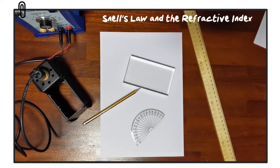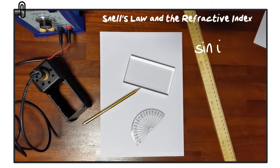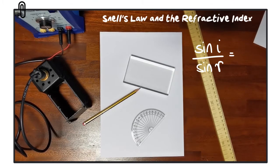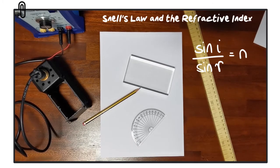That constant is known as the refractive index. We write this as the sine of the angle of incidence divided by the sine of the angle of refraction, which equals a constant given the symbol n.